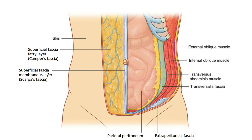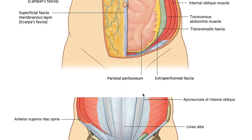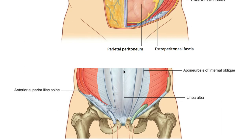Two important structures from an exam perspective are Camper's fascia and Scarpa's fascia, which are parts of the superficial fascia and mostly contain fat. Camper's fascia is the more superficial layer, and Scarpa's fascia is below it. A helpful mnemonic: like the game Counter-Strike, 'C' comes before 'S' — alphabetically and from outer to inner.